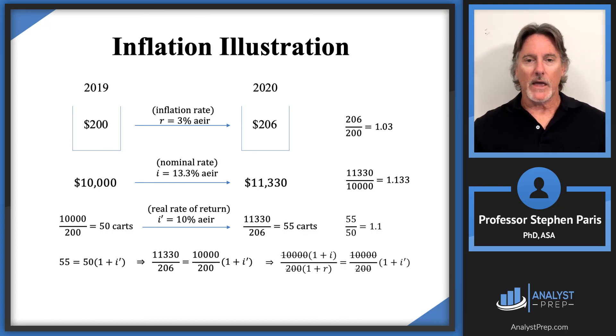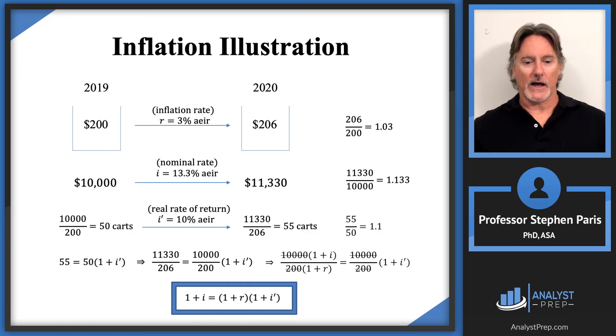From this last equation, you can see it didn't really matter that I started with groceries costing $200 and an initial balance of $10,000, because those cancel off. When I clear out fractions, I get the equation that (1 + i), one plus the nominal rate, equals (1 + r) times (1 + i'), one plus the inflation rate times one plus the real rate of return. That's the important equation from this lesson.